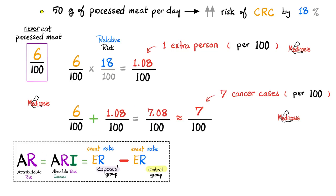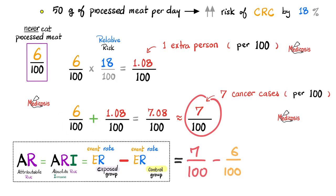Can we calculate the attributable risk, i.e. the absolute risk increase? Sure. This equals the event rate in the exposed group — exposed to processed meat — minus the event rate in the control group, which did not consume processed meat. In biostatistics, always start with the big number and subtract the small number to get a positive result. The attributable risk equals 7 in 100 minus 6 in 100, which gives 1 in 100, or 1%. This is the absolute risk increase caused by eating processed meat — the risk of colorectal cancer attributable to its consumption.